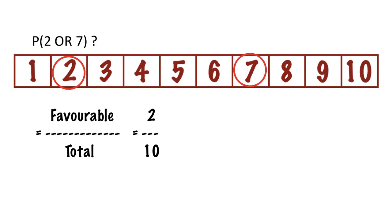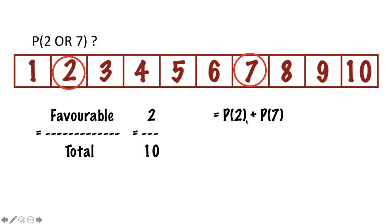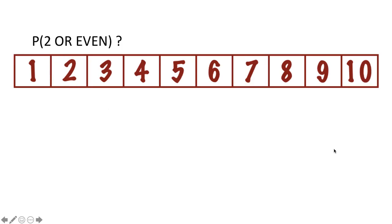In this case, it happens to be true that this is the same answer you'd get if you separately calculated the probability of getting a two and the probability of getting a seven and added them together. But this is dangerous — it's not always safe, so it's something you should avoid. The probability of two is one out of ten, the probability of seven is one out of ten, and you add those to get two out of ten. It works here, but not always.